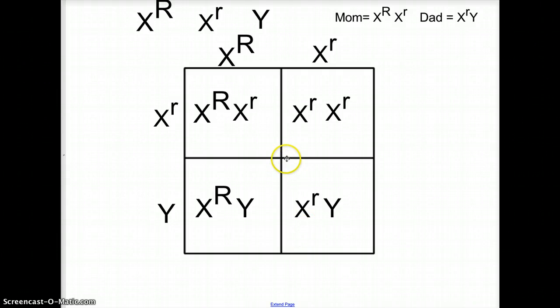And now if I said to you, how many of the females would have red eyes? You'd have to look at just the females here. One box has red, one has white, so 50% of the females have white eyes.